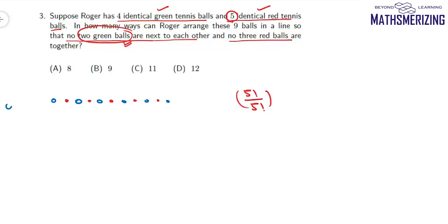This is called the gap method. So out of these six, I'll choose four gaps for these green balls. So it is 6C4 and then factorial four upon factorial four. So it'll be simply 6C4, which is 15 ways.